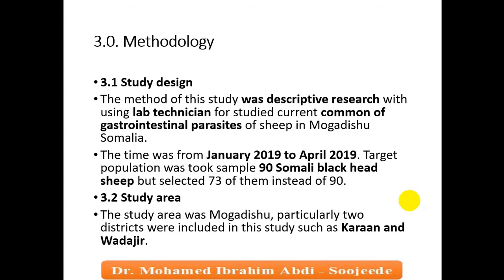We collected samples from 73 sheep instead of the full target of 90. So 90 was our target, but the actual sample size was 73. The study area was Mogadishu, specifically two districts — Karan and Wadajir — which are common areas for household smallholder farming. Our focus was on parasitic diseases in sheep.